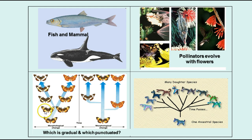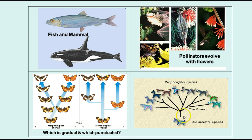Gradualism versus punctuated equilibrium is about whether changes are gradual over time leading to separate species, or whether there are big jumps for various reasons. Then we have adaptive radiation, where one ancestral species ends up being ancestral to many daughter species because of different environments they live in.